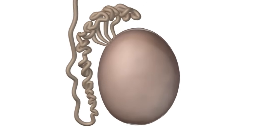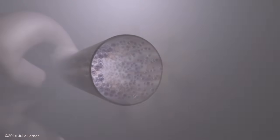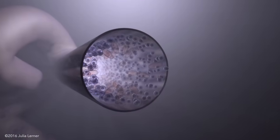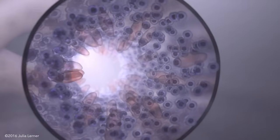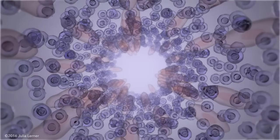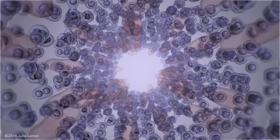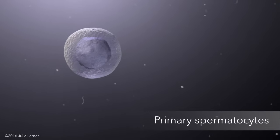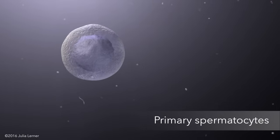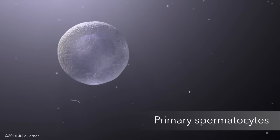Sperm develop in the seminiferous tubules of the testes. Primordial sperm cells called spermatogonia lie dormant in the outer compartment of the tubules from the late fetal period until puberty. At puberty, the spermatogonia undergo mitotic divisions, giving rise to genetically identical cells. The cells grow gradually into primary spermatocytes, preparing to divide into cells half their size.